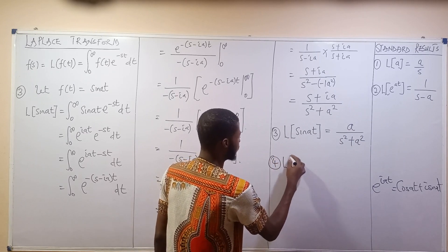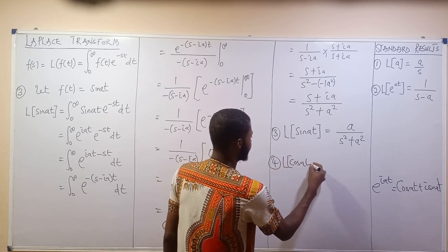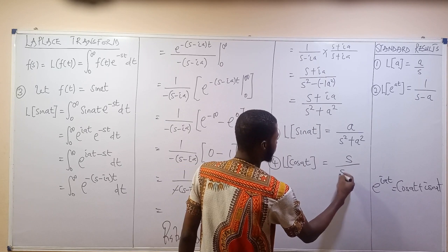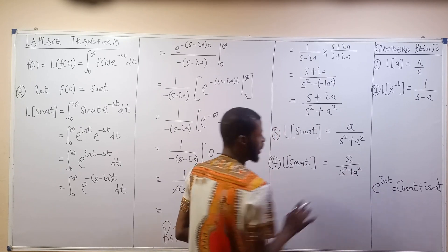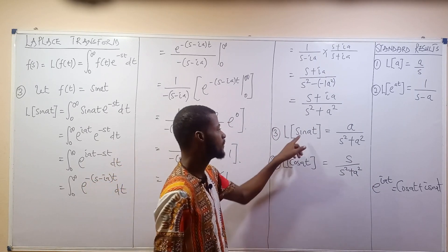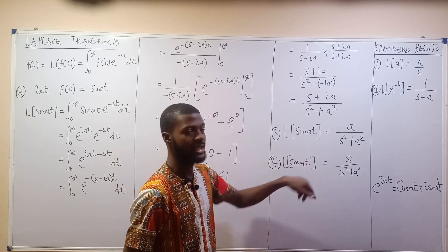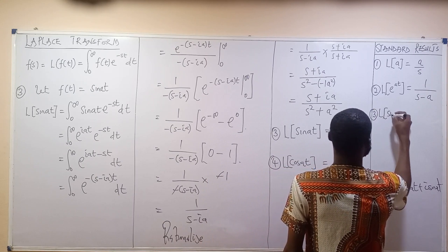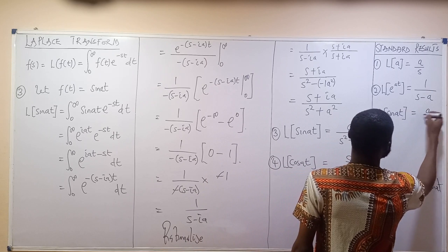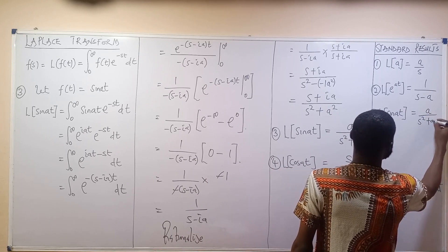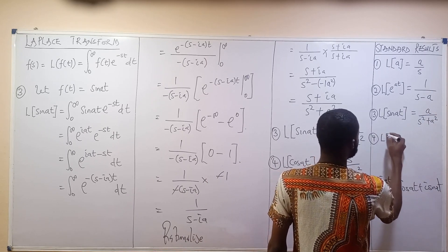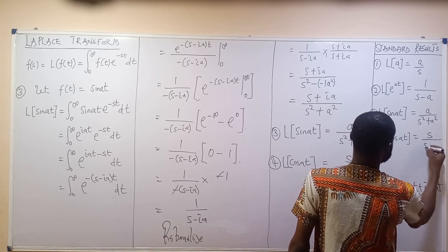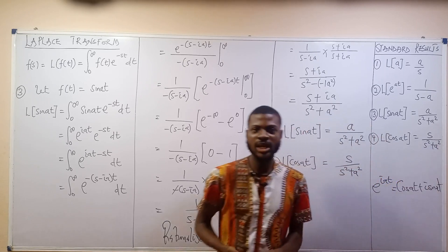If the question asks for the Laplace transform of cos at, you pick the real part only. So the Laplace transform of cos at equals S over S squared plus A squared. So the two results are: Laplace transform of sine at equals A over S squared plus A squared, and Laplace transform of cos at equals S over S squared plus A squared.